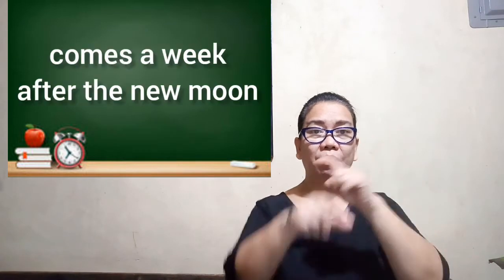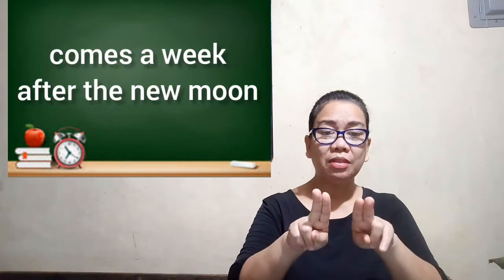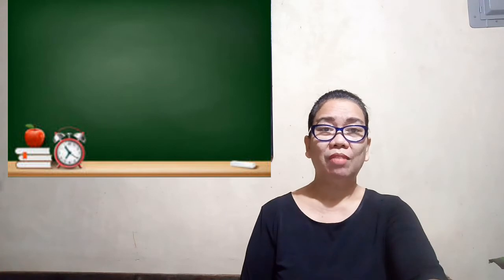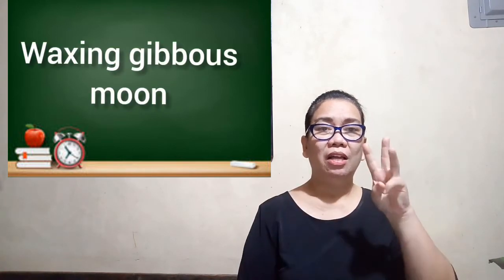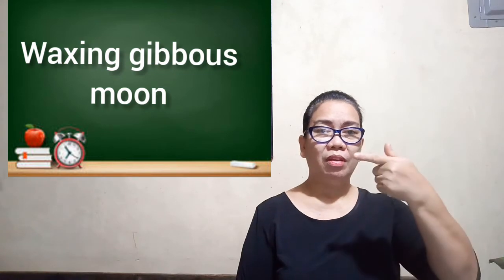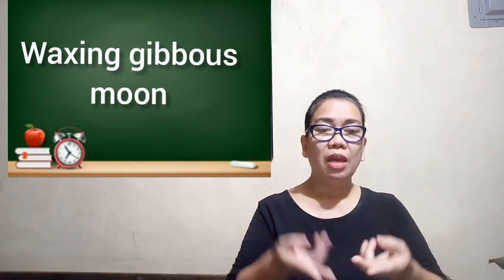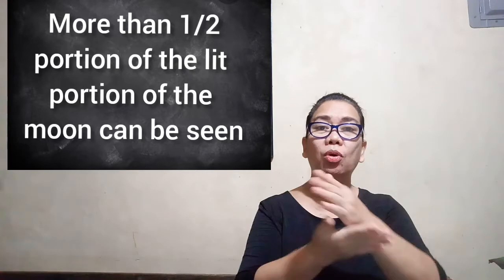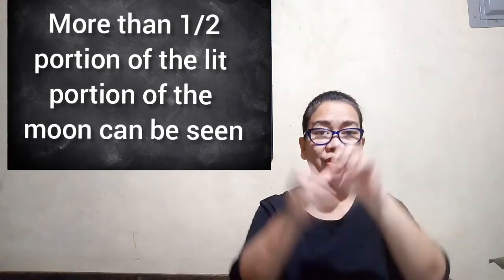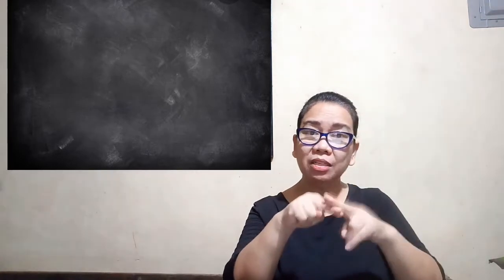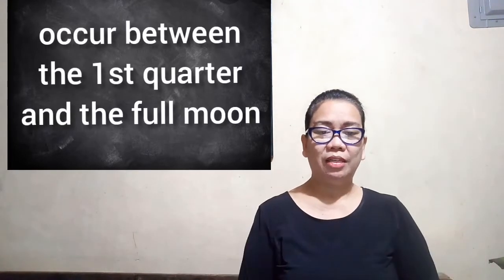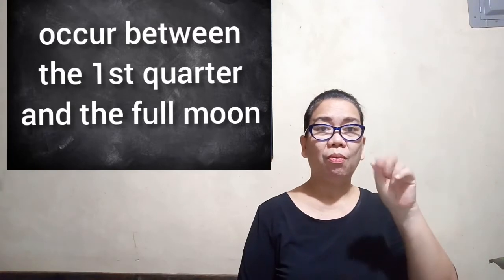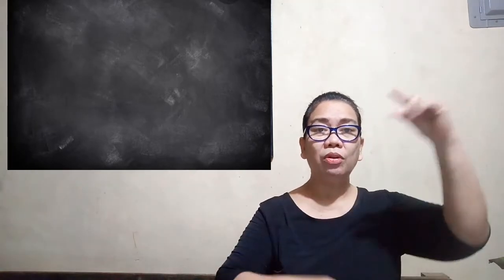The fourth phase is the waxing gibbous moon. It occurs when more than half of the lit portion of the moon can be seen and the shape increases in size from one day to the next. This phase occurs between the first quarter and the full moon phase.